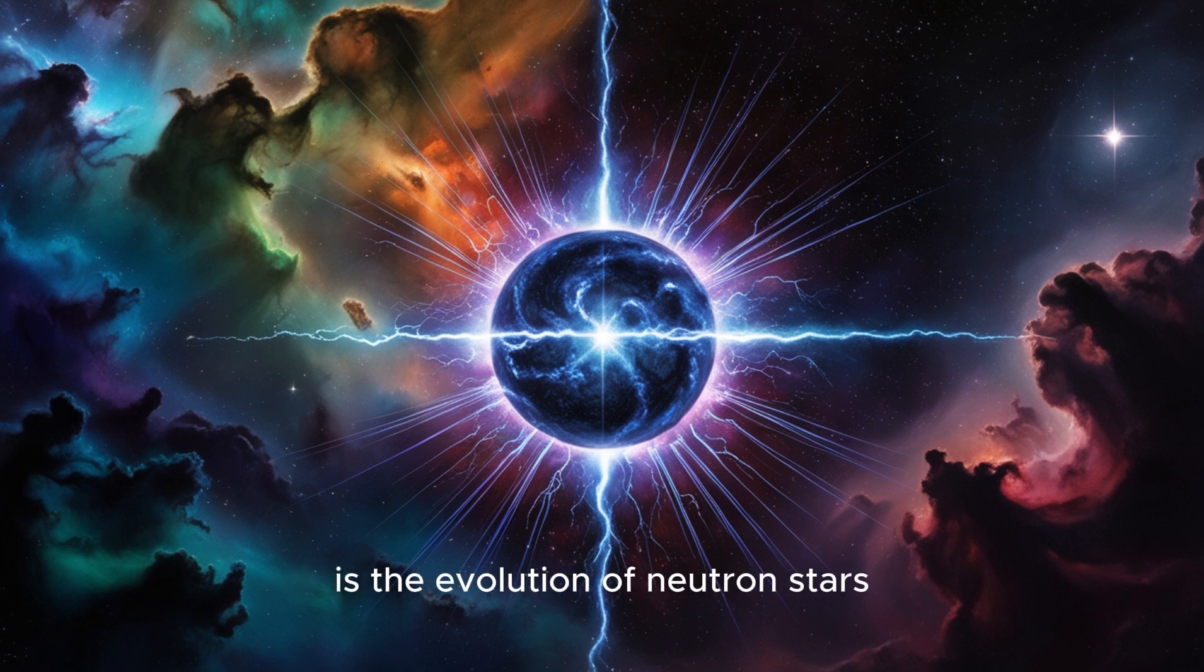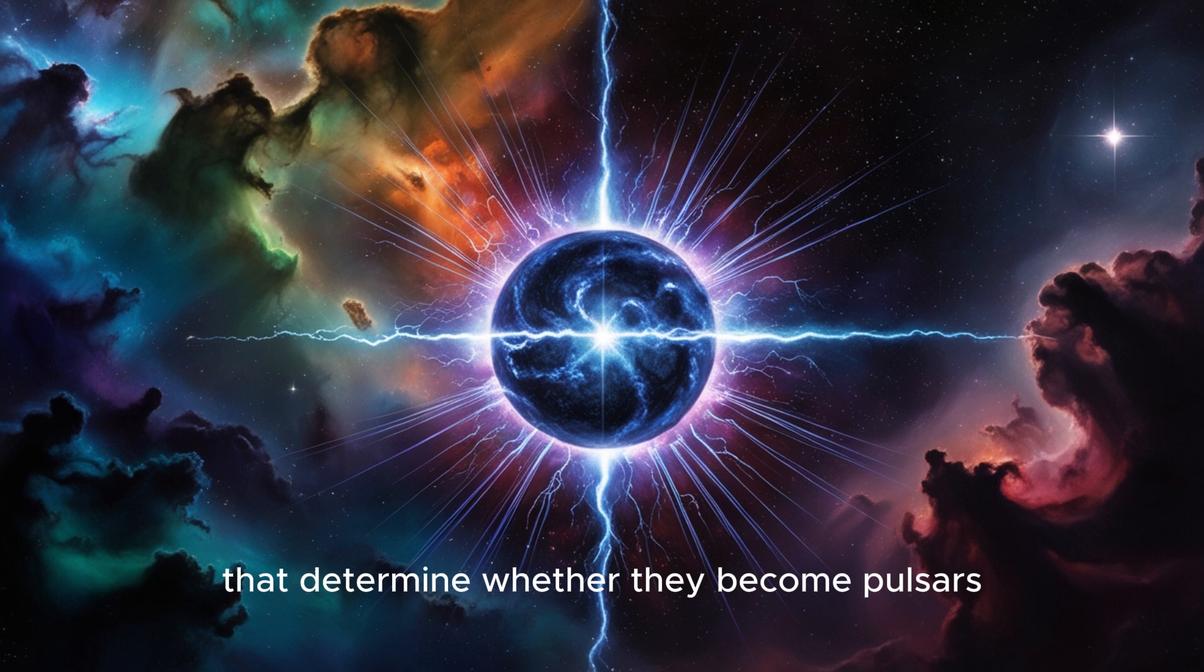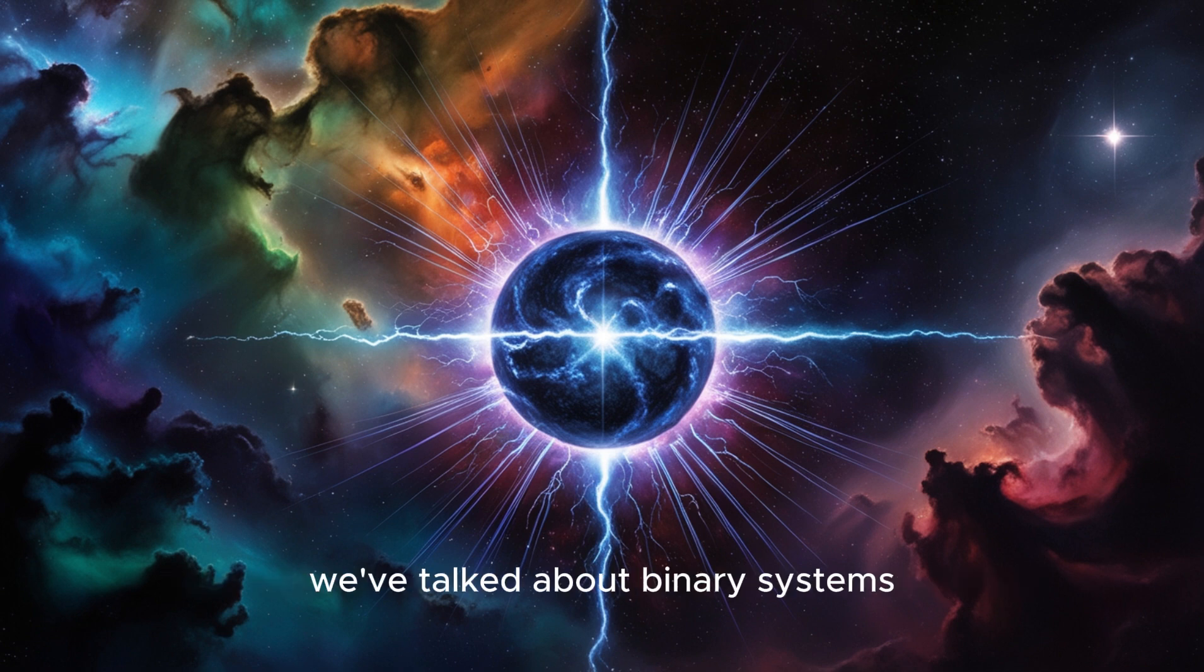It's like trying to peek inside a cosmic pressure cooker where the laws of physics as we know them might be completely different. Another major area of focus is the evolution of neutron stars. How do they change over time? What are the factors that determine whether they become pulsars, magnetars, or something else entirely? And what about their role in the larger cosmic ecosystem?